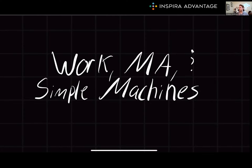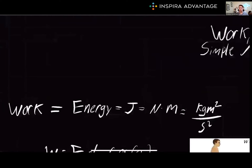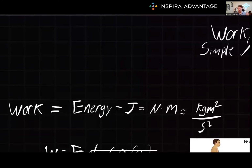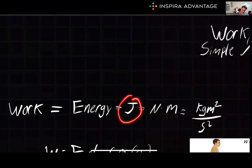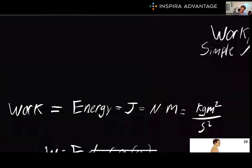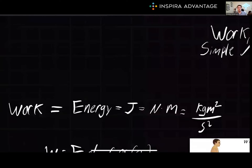Beginning with defining what is work anyway. Work is the transfer of energy that occurs when a force is applied to an object, causing it to move some distance. The SI unit for work is the joule, which is the same as for energy. Joules can be broken down into newton-meters, and newtons can further be broken down into kilograms meters over second squared, so the whole thing becomes kilograms meters squared over second squared.